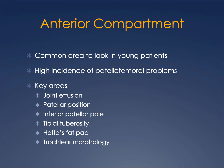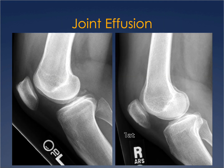The anterior compartment is a very common area to look at, especially in younger patients. There's a high incidence of patellofemoral problems. The first thing I find many residents have difficulty identifying is a joint effusion. On the left image, in the suprapatellar pouch, you see a small thin band of tissue — the normal flattened synovium. On the right image, there is a more bulbous soft tissue as pointed out by the arrow — a suprapatellar effusion. This is the first sign of internal derangement or something abnormal inside the joint.